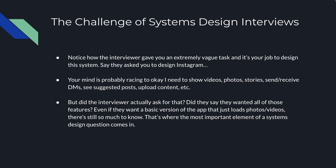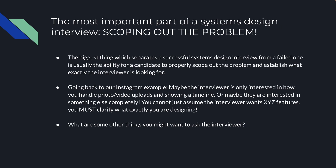Even if they wanted a basic version of the app that just loads photos and videos, there's still so much to know. That's where the most important element of a system design question comes in: scoping out the problem. The biggest thing which separates a successful system design interview from a failed one is the ability for a candidate to properly scope out the problem and establish what exactly the interviewer is looking for. Maybe the interviewer is only interested in how you handle photo and video uploads and showing a timeline. You cannot just assume that the interviewer wants XYZ features — you must clarify exactly what you're designing.